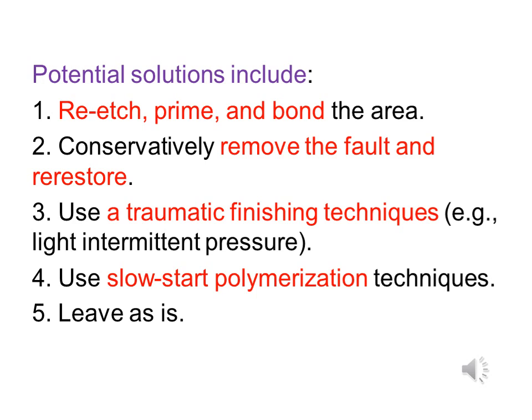Potential solutions for micro fracture of marginal enamel include: number one, proper etching, priming, and bonding of the area. Number two, conservatively remove the faulty area and restore it using an atraumatic finishing technique — for example, light intermittent pressure. Number three, use slow-start polymerization techniques. Number four, leave as is if appropriate.